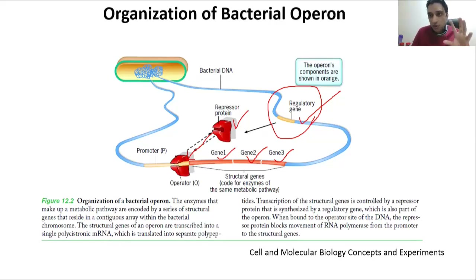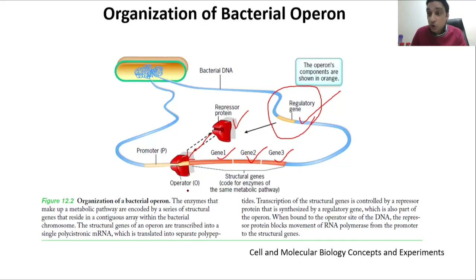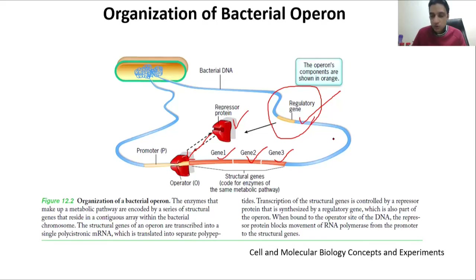The thing that controls the expression here is a regulatory gene that produces a protein. That protein binds to a place called the operator — that is the place from where gene expression is controlled. In this example, it is controlled with the help of a repressor protein. As long as the repressor protein is there, these three genes will not be expressed. You need to remove the repressor or silence the regulatory gene to allow expression.